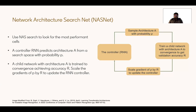So how does NASNet search for the best performance cells? It leverages a controller RNN, which predicts an architecture A from a search space with probability P. On this architecture, a child network is trained to get convergence with validation accuracy R. And then using R, the gradient of P is scaled, and the controller is updated. The controller can then be used to sample another architecture A.